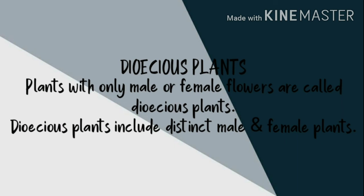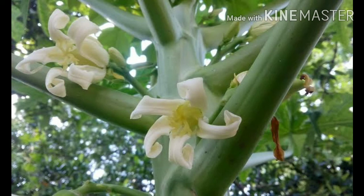The last type is dioecious plants, which possess only male or female flowers — they have distinct plants for each kind of flower. A classic example is nutmeg or papaya. For nutmeg, only the female can produce fruits, not the male. Similarly, a male papaya plant has a bunch of flowers but doesn't produce much fruit, while a female papaya plant has only one flower between a stem and produces the papaya we eat. So dioecious plants have distinct plants for each kind of flower.